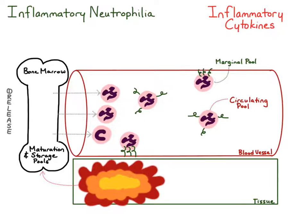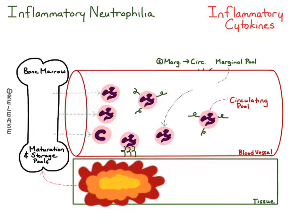Also, during inflammation, there is a shift of the marginal pool neutrophils that are not at the site of inflammation into the circulating pool. Those marginal pool neutrophils away from the inflammatory site act essentially as another storage pool of neutrophils. They get mobilized into the circulating pool, which is another cause of an inflammatory neutrophilia.